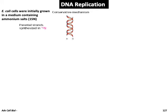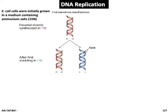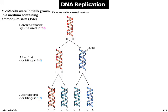Describing the conservative mechanism first: after the first doubling in normal media containing normal N14, if replication proceeds conservatively, another bacterium will have a duplex of DNA composed mainly from the media, which is light with no radioactivity. After the second doubling in normal media, the conservative mechanism proposes that a totally light, non-radioactive new duplex is formed, while the parent duplex from the first round remains intact.